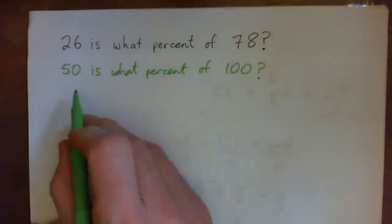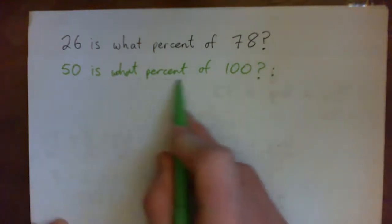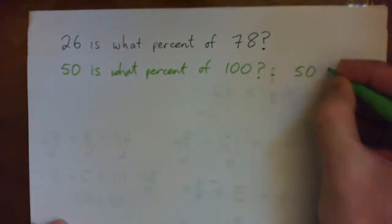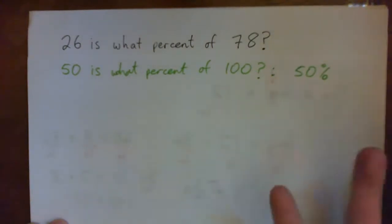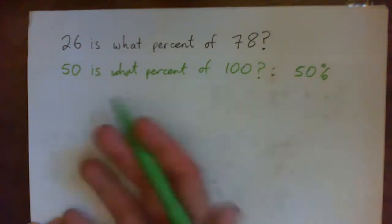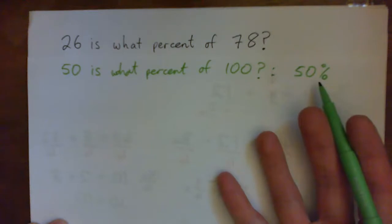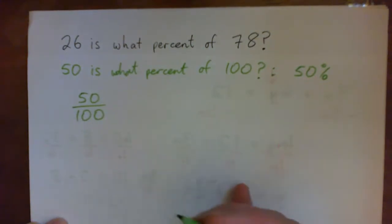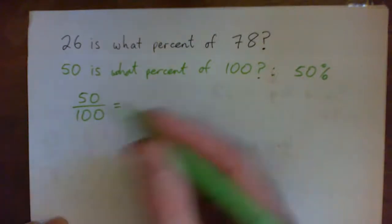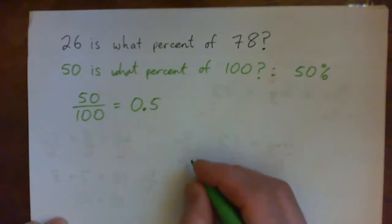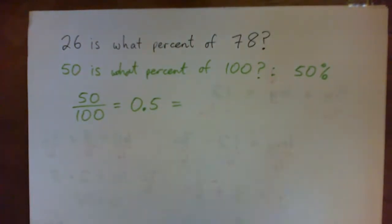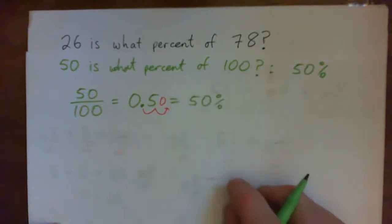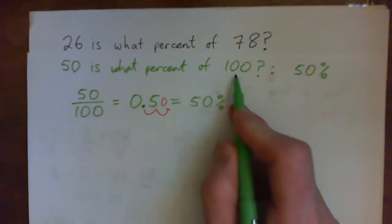Can you give me the answer? 50 is what percent of 100 — the answer is 50%, right? 50 is half of 100, so it's 50%. But what method would we use to get that? We could write 50 over 100, divide to turn that into a decimal — 0.5 — and then move the decimal point two spots to get 50%. So the method is to put the first number over the second number.